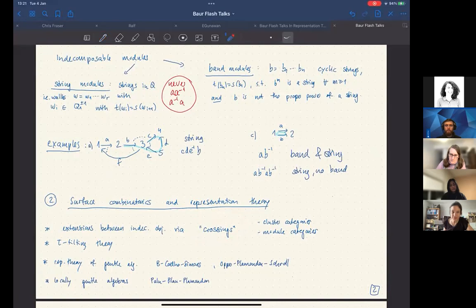Extensions between indecomposable objects can be described via crossings. So in cluster categories, this has been studied a lot, for example, by Brüstle-Zhang, also in module category, or in joint work with Marsh on tubes.